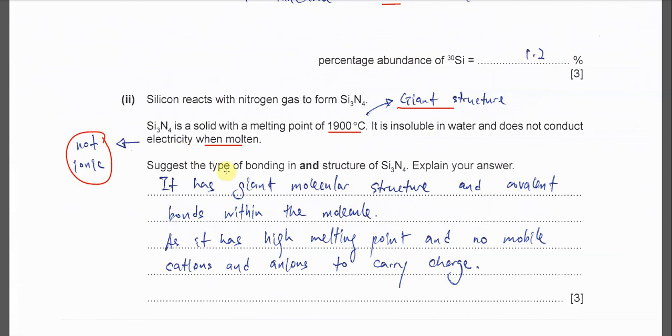The type of bonding and the structure: we know that it must be the giant molecular structure and it must have covalent bonds within the molecule because no ions or no ionic bonds. You just explain like this: As it has high melting point shows that it's a giant structure, and no mobile ions and anions to carry charge when it's molten.